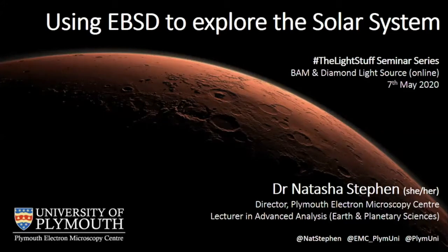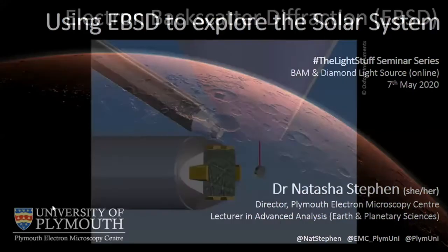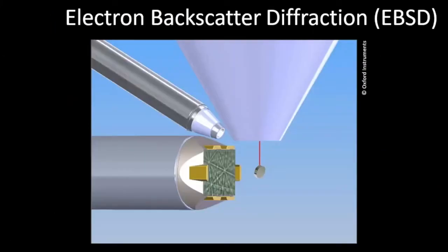I'm going to be talking about using EBSD to explore the solar system. To start with I need to tell you a little bit about what EBSD is. Electron backscatter diffraction is a technique that we can use in an electron microscope, and it utilizes a type of EBSD detector which you can see here. We have an electron beam being generated in the microscope, illustrated by this red line, and then you normally have a series of other detectors for imaging — atomic contrast images or x-ray element maps.